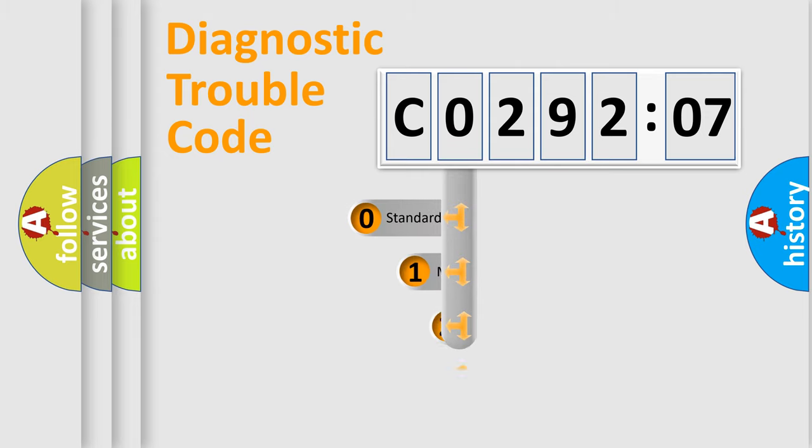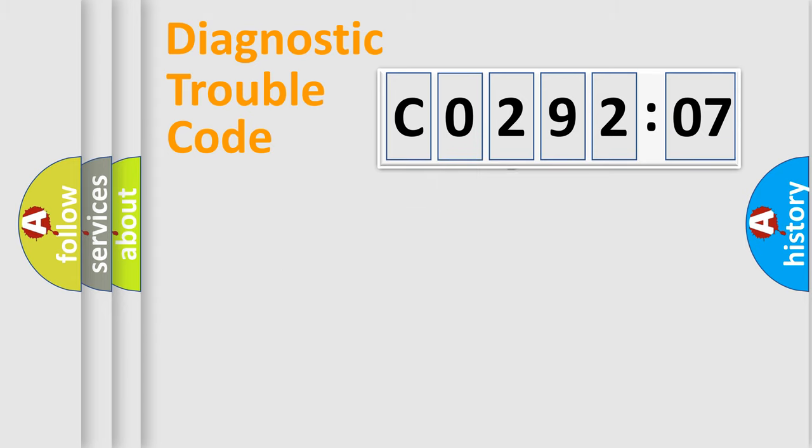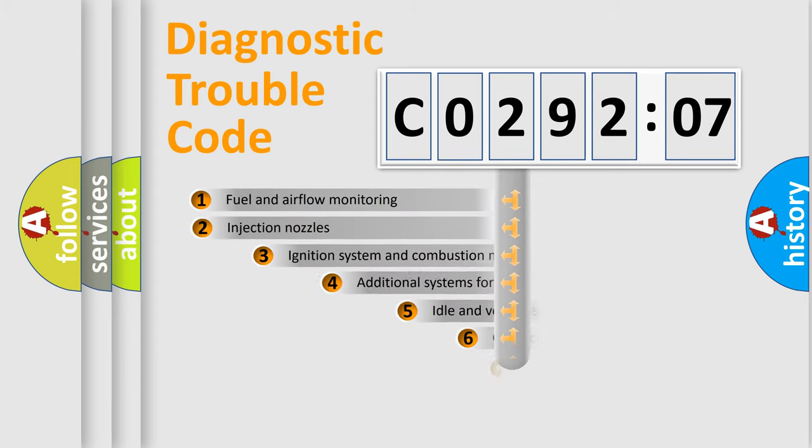This distribution is defined in the first character code. If the second character is expressed as zero, it is a standardized error. In the case of numbers 1, 2, or 3, it is a more prestigious expression of the car-specific error.